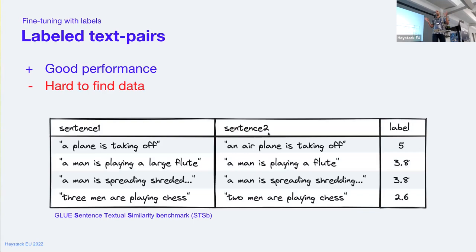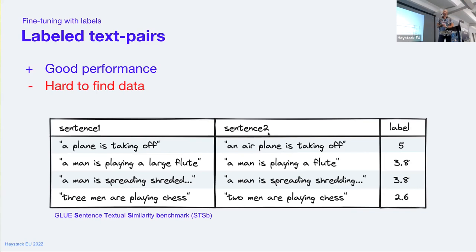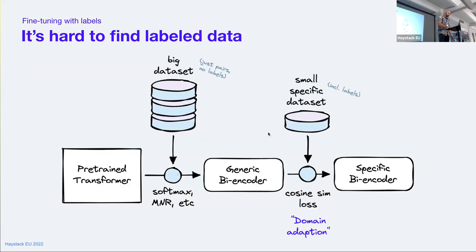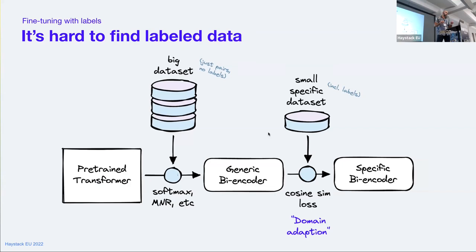The most ideal scenario is where you have sentence A, sentence B, and similarity scores telling you how relevant these two items are. If you can fine-tune on something like this, you'll get good performance, but it's really hard to find these datasets and they tend to be quite small. What you can usually do is use this as your final step — starting with an easier-to-find semantic similarity dataset using a different fine-tuning approach such as softmax loss, multiple negatives ranking, or something else.